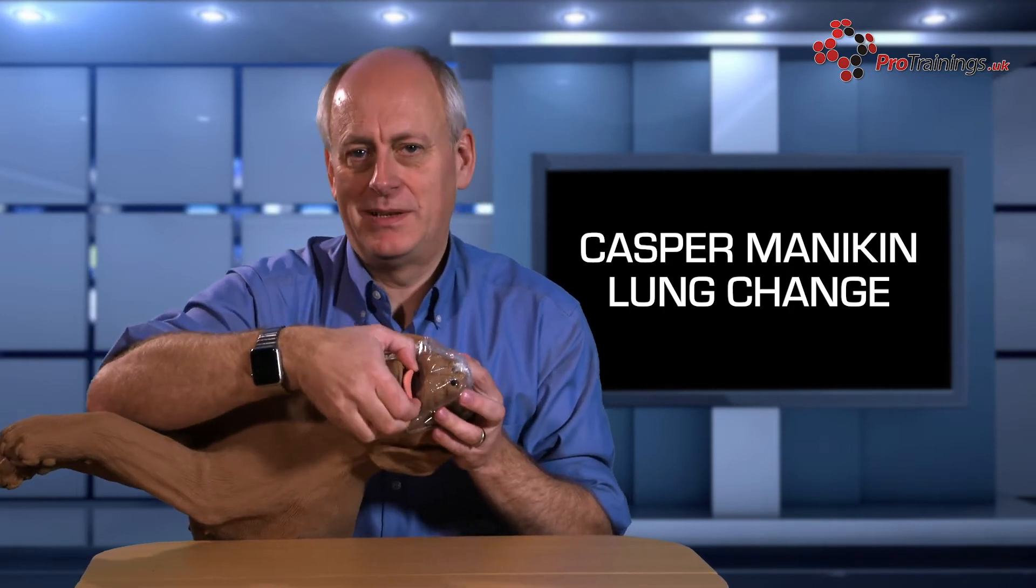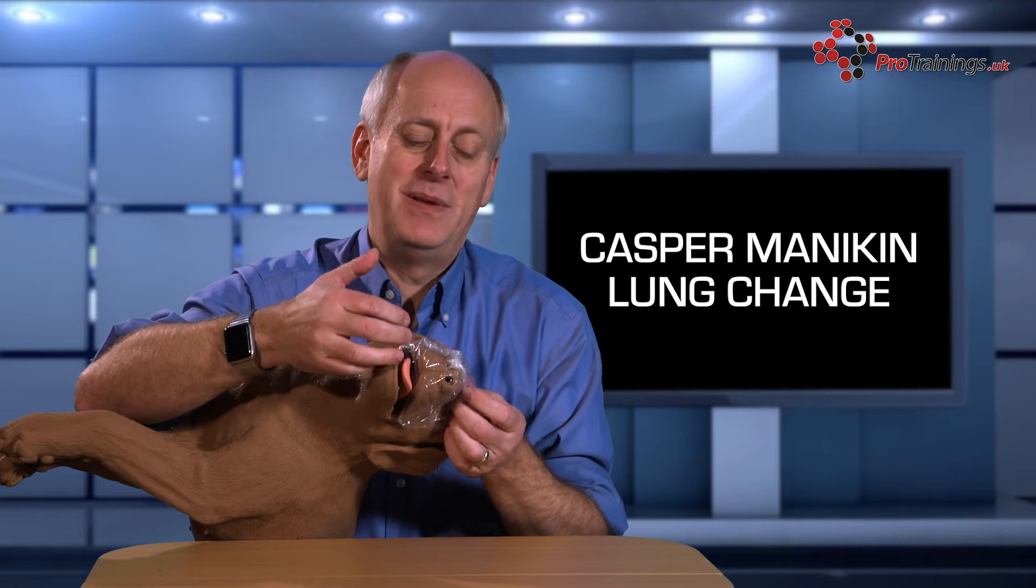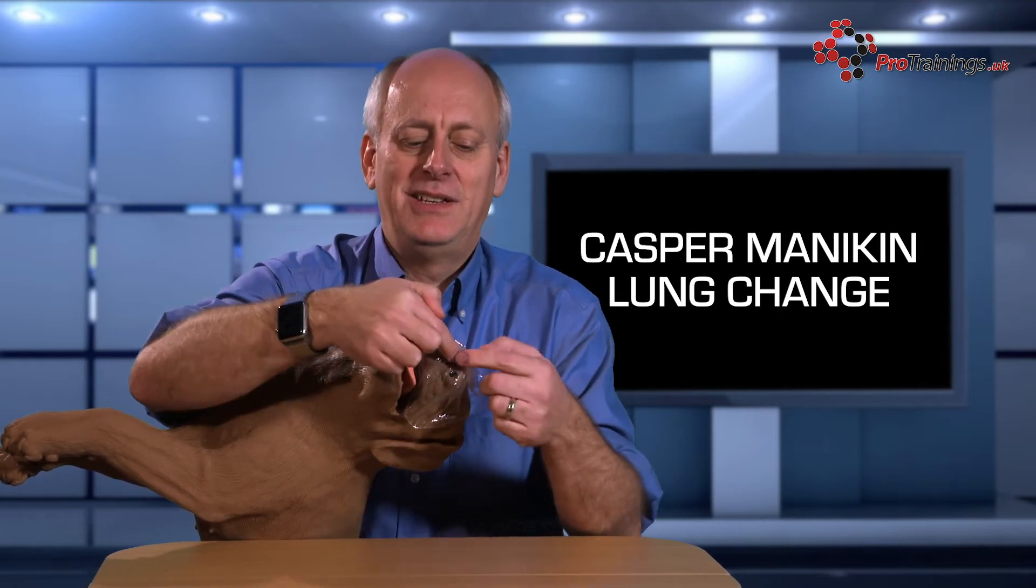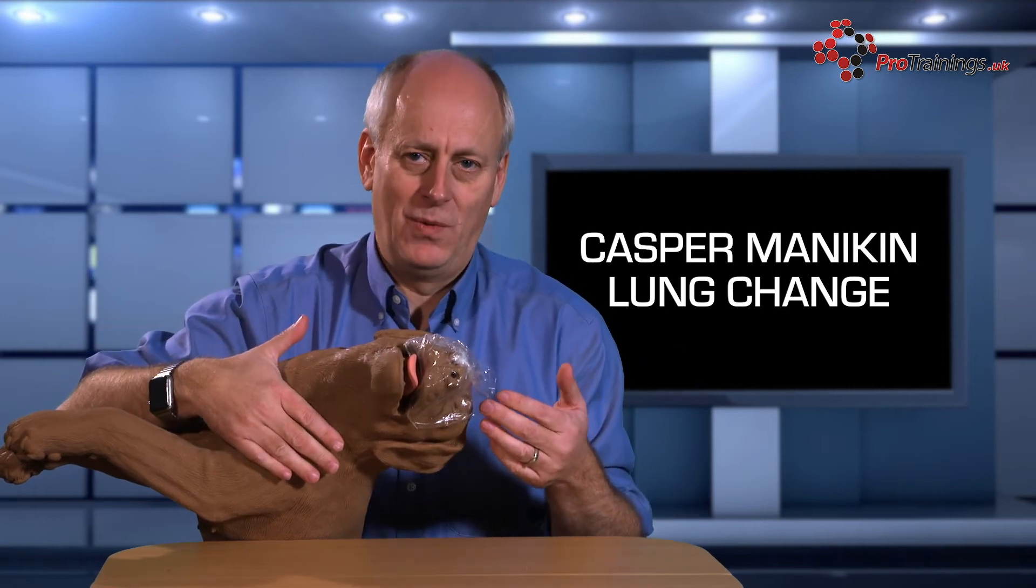From here we can still pull the tongue out to one side to simulate opening the airway. We've got a complete barrier around the nose of the mannequin and then it's easy to blow the air in and you can see the chest rising and falling.